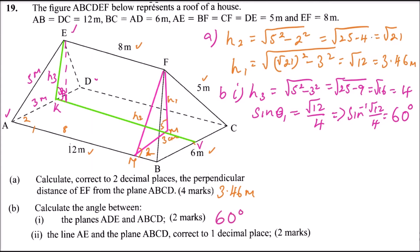Now for part (b)(ii): the angle between line AE and the plane ABCD. To find this, we drop a perpendicular from E down to the plane and join it back to A. Calling that foot U, the angle θ2 is between AE and its projection AU on the plane.